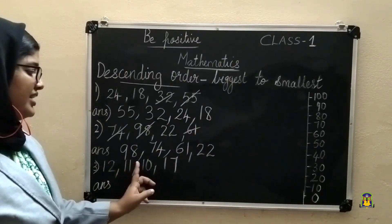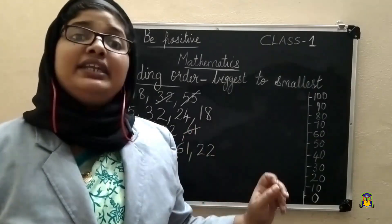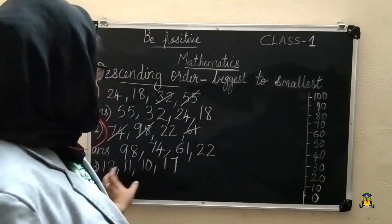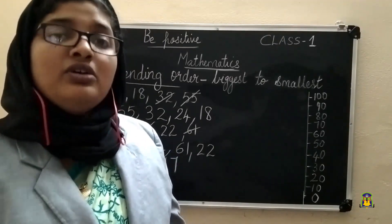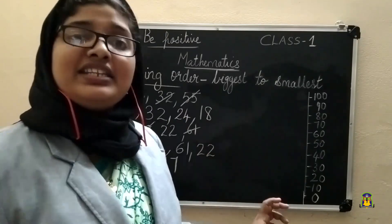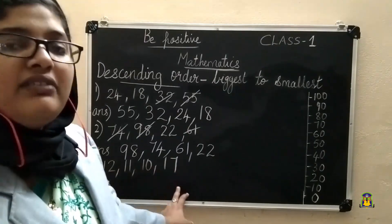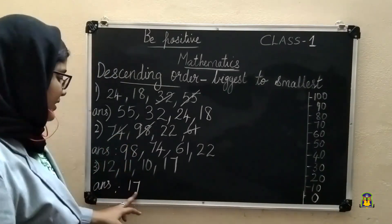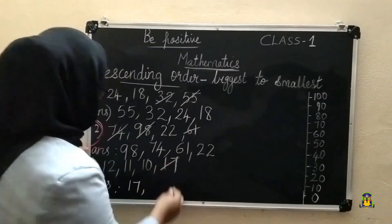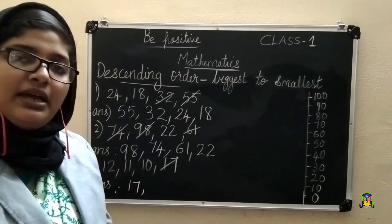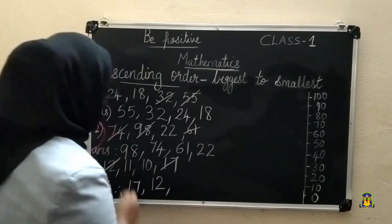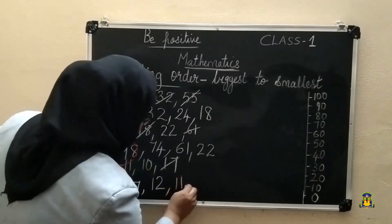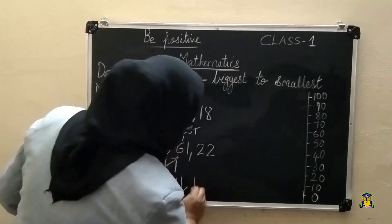Last question: 12, 11, 10, 17. Just like in ascending order, the tens place is the same — all are 1. So we look at only the ones place to find the largest number. Among 12, 11, 10, 17, the largest is 17. We write 17. Then from the remaining 12, 11, 10, the largest is 12. Then from 11 and 10, the largest is 11. The remaining number is 10. Descending order: 17, 12, 11, 10.